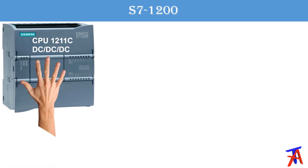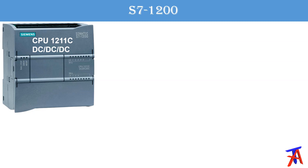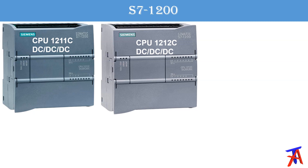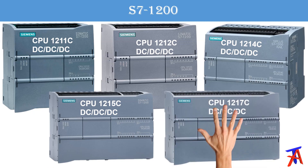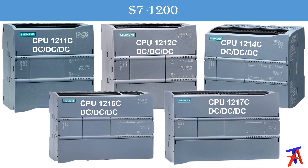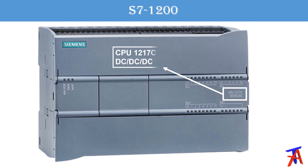Let's discuss the different CPUs of the S7 1200 PLC. There is CPU 1211C, 1212C, 1214C, 1215C, and the last one is 1217C — all in the DC/DC/DC variant. The 1217C is the most powerful CPU among the S7 1200 series, with more work memory, more system memory, and more load memory.